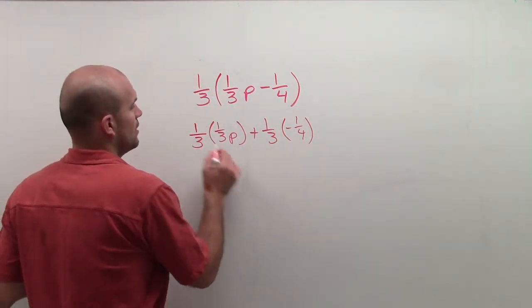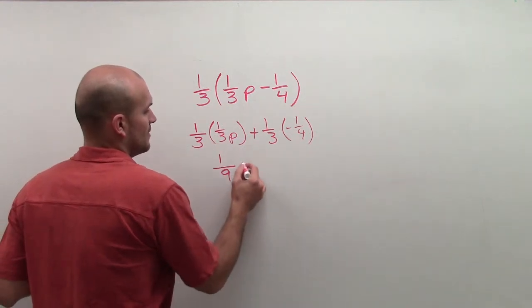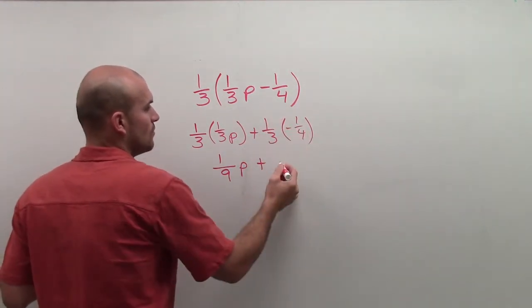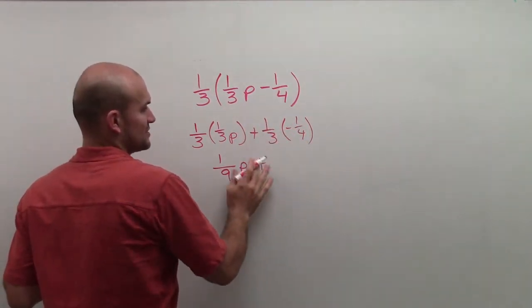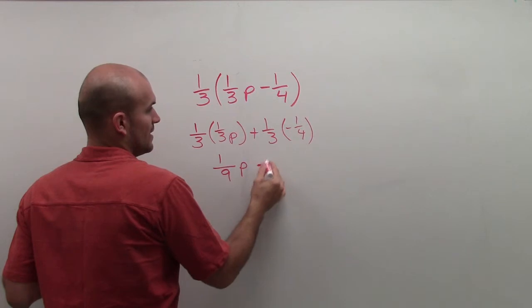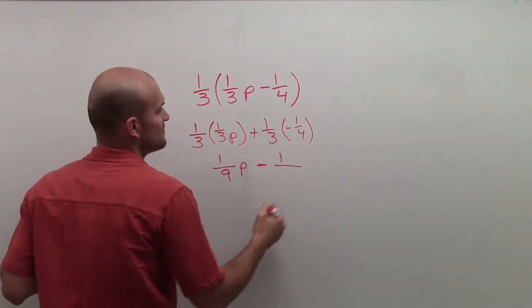So here I have one times one is one, three times three is nine with a p. Plus, one times—well, positive and negative is actually going to produce me a negative—and then one times one is one over three times four which is twelve.